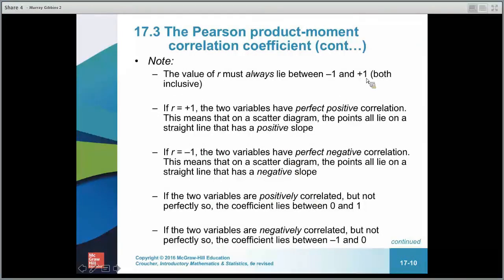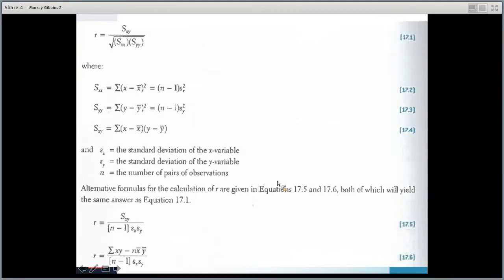R has to lie between minus 1 and positive 1. If all the dots are on a line sloping up, the correlation is positive 1. If all dots are on the line sloping down, it's a perfect negative correlation of minus 1. Values around 0.8 or 0.9 indicate quite strong positive correlation, and minus 0.8 or minus 0.9 indicate quite strong negative correlation.